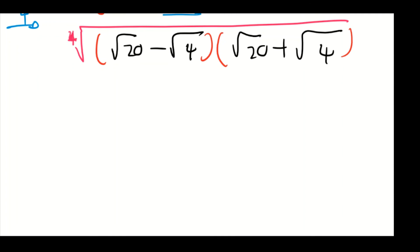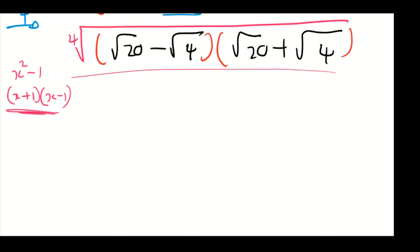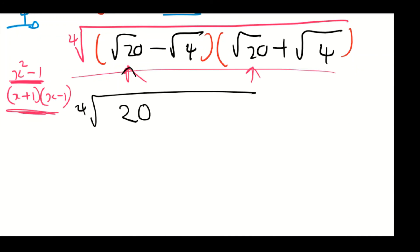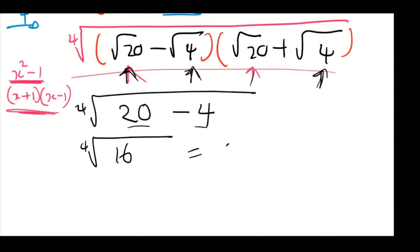This expression is a difference of two squares — recall that (x plus 1)(x minus 1) equals x squared minus 1. So we multiply: square root of 20 times square root of 20 gives 20, and square root of 4 times square root of 4 gives 4. So we have the fourth root of (20 minus 4), which is the fourth root of 16. The fourth root of 16 gives a solution of 2.